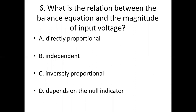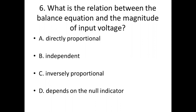Sixth bit. What is the relation between the balance equation and the magnitude of input voltage? Option A: directly proportional. Option B: independent. Option C: inversely proportional. Option D: depends on the null indicator. Answer: Option B, independent.